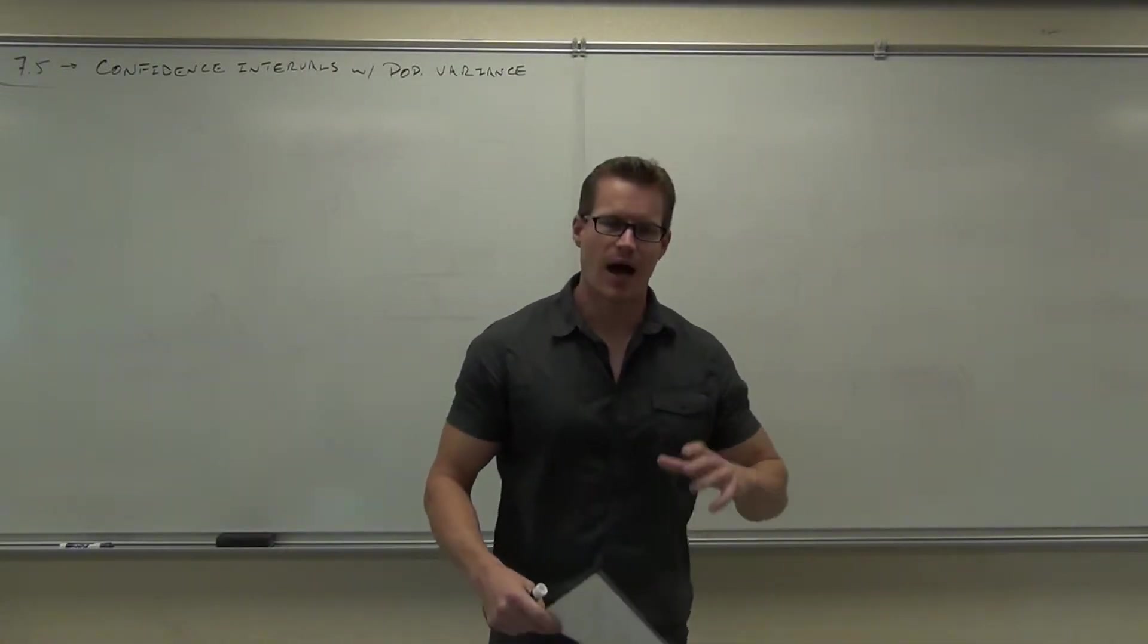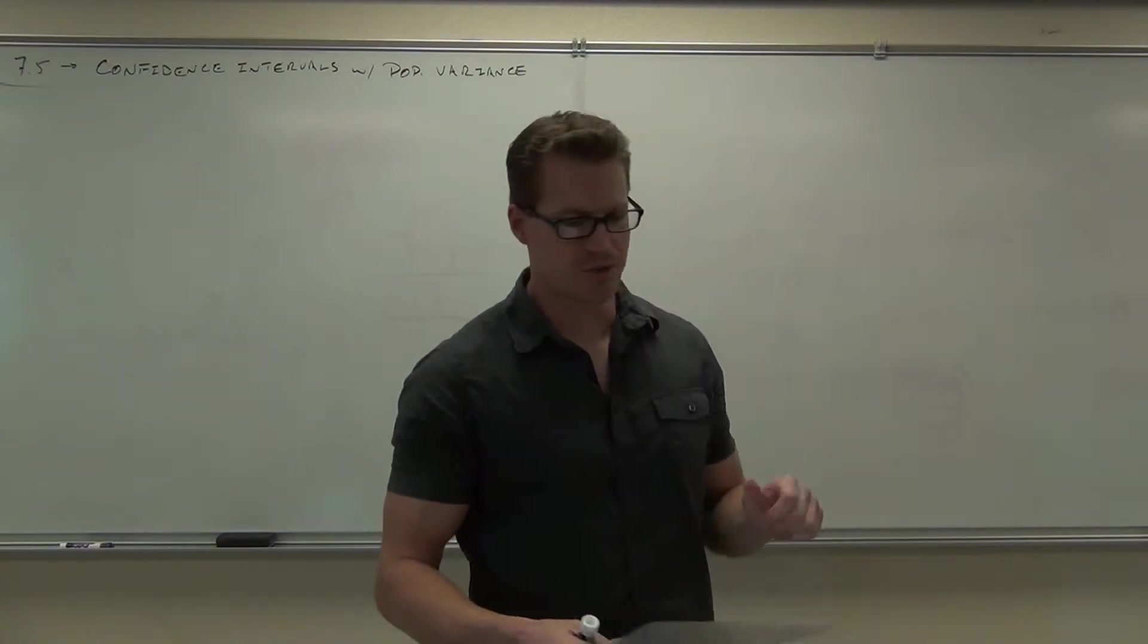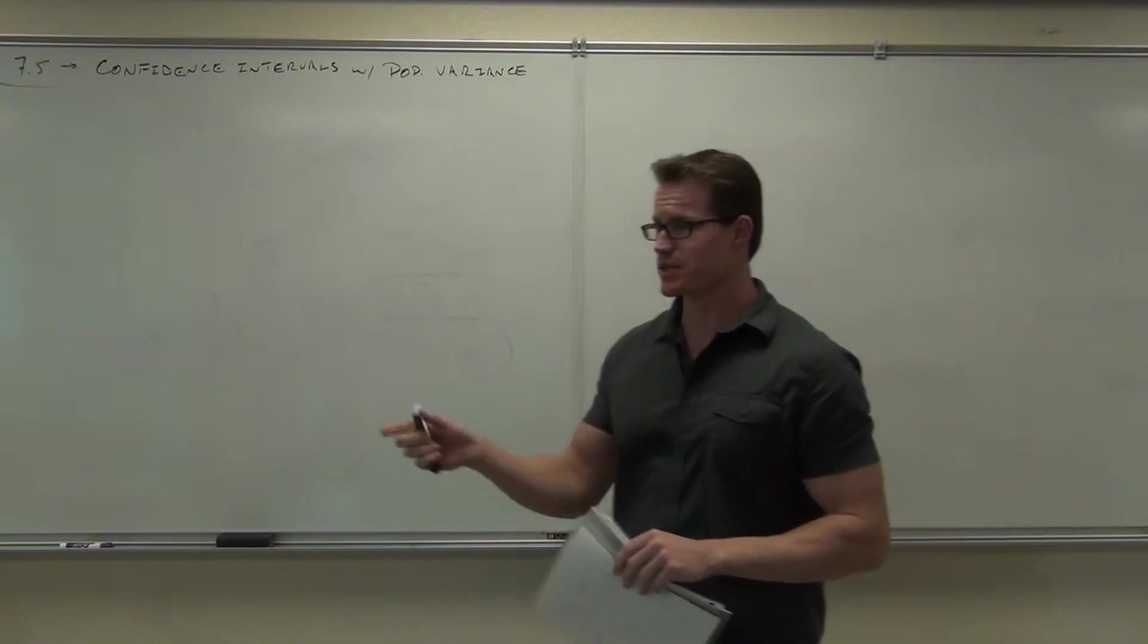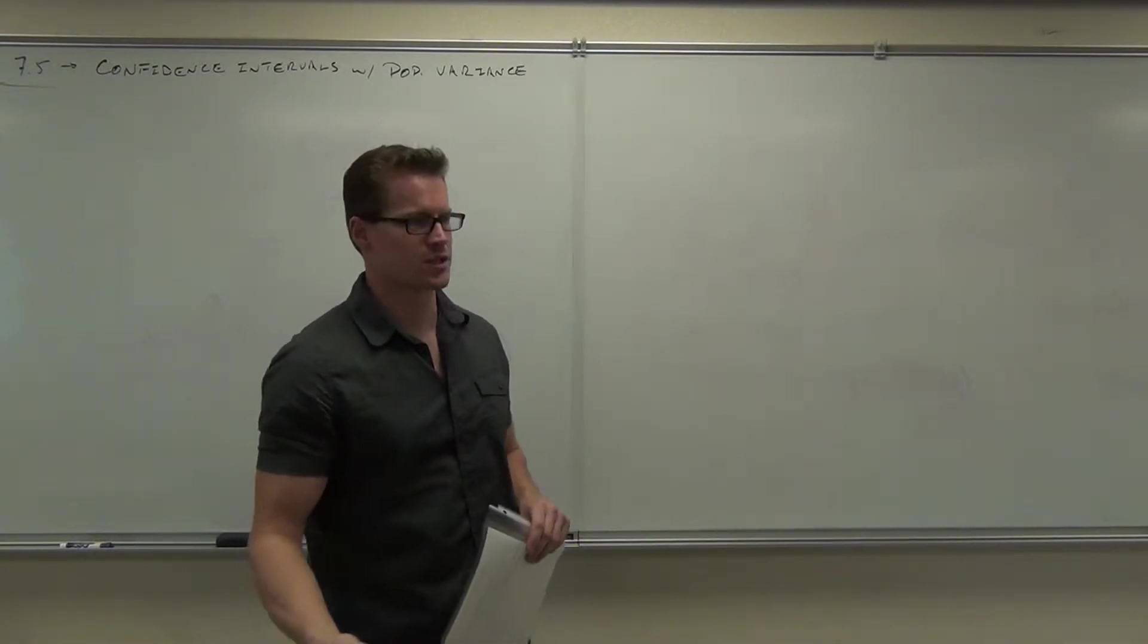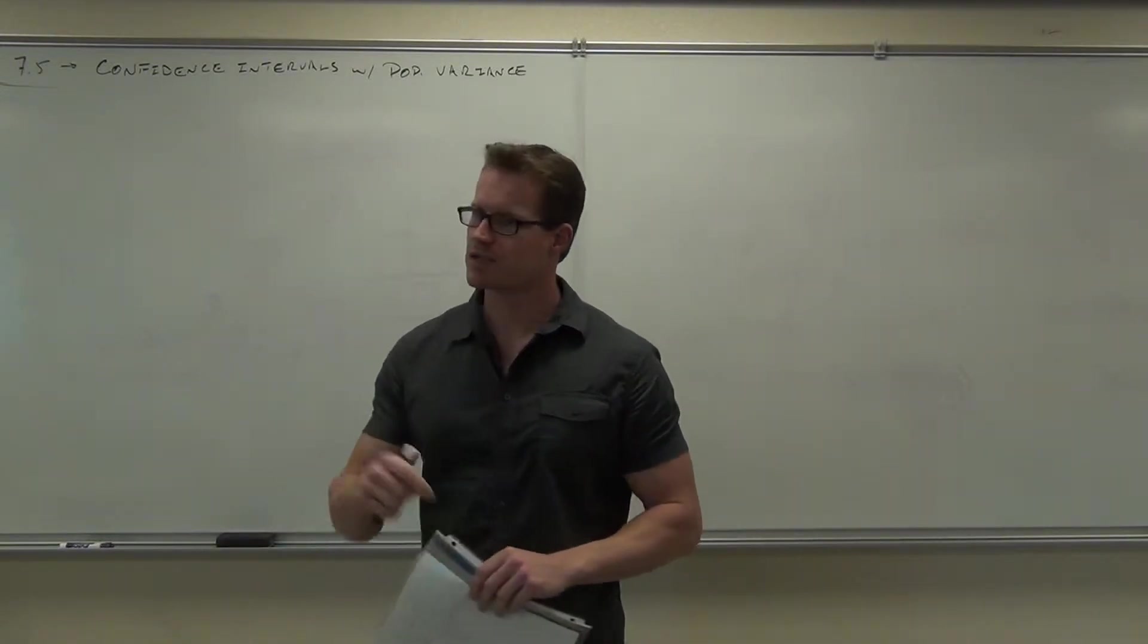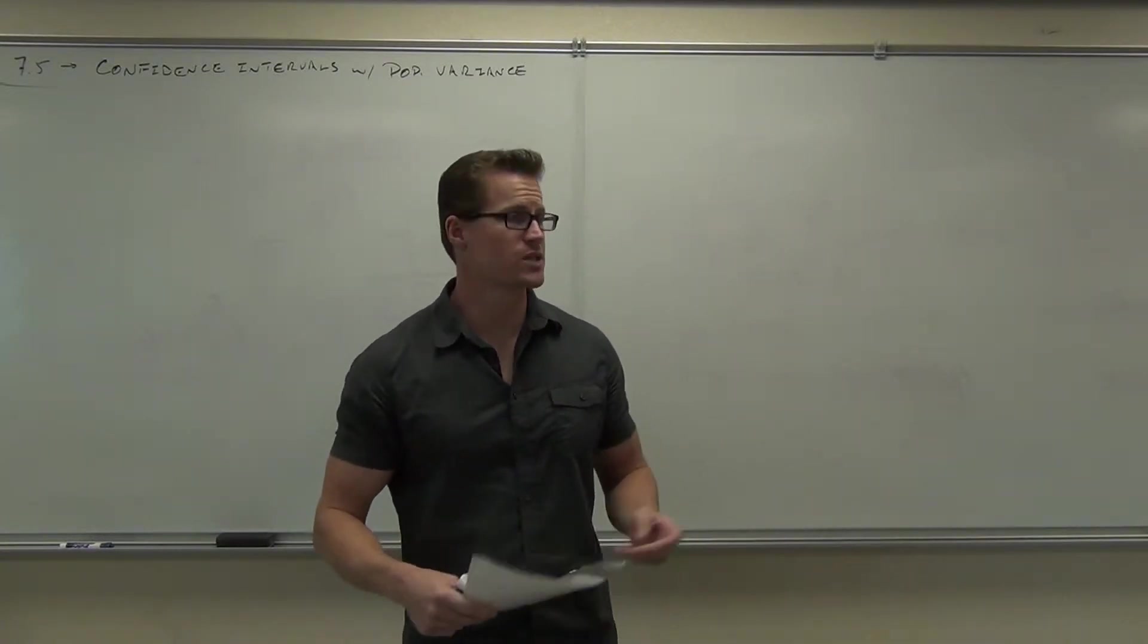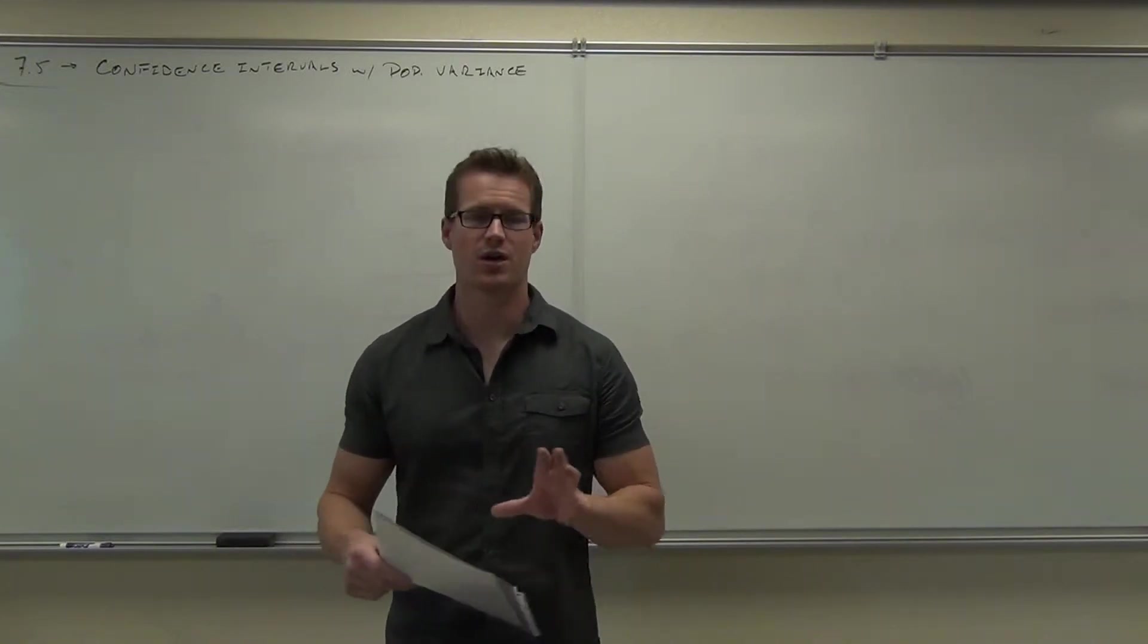The last thing we've got to do is talk about how we can estimate our population variance and standard deviation. If we're going to estimate or use a confidence interval for population variance, it's going to be very similar method-wise to doing any other confidence interval. The only difference is we're going to have a different critical value based on a chi-square distribution, which is on your table. Other than that, it's the same idea for a confidence interval. You just need to know how to use the table.